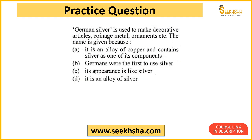Next question German silver ke upar - NCRT mein mentioned hai aur itne exams mein aaya hai, state exams, CDS, CAPF - har tarah ke exam mein yeh question pucha gaya hai. German silver decorative articles, coins, ornaments banane ke liye use hota hai. Option A: yeh copper ka ek alloy hai aur iske andar silver ek component hai; option B: Germans were the first to use silver; option C: its appearance is like silver; option D: it is an alloy of silver.